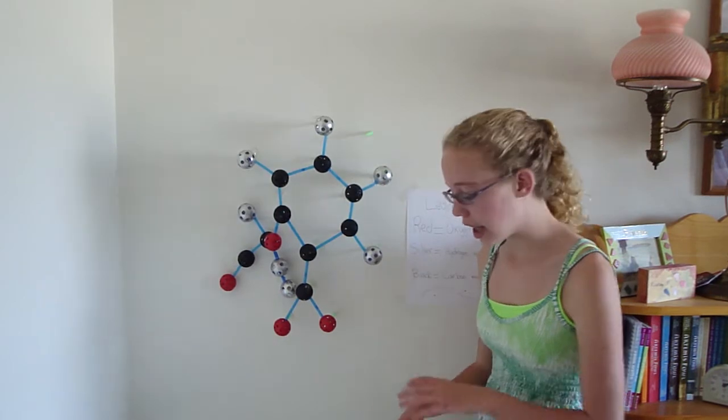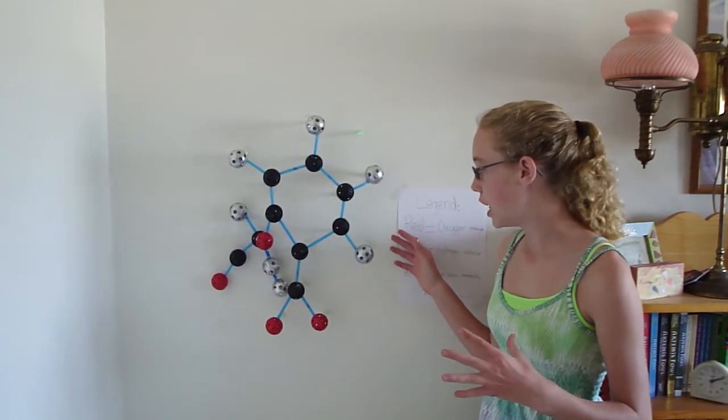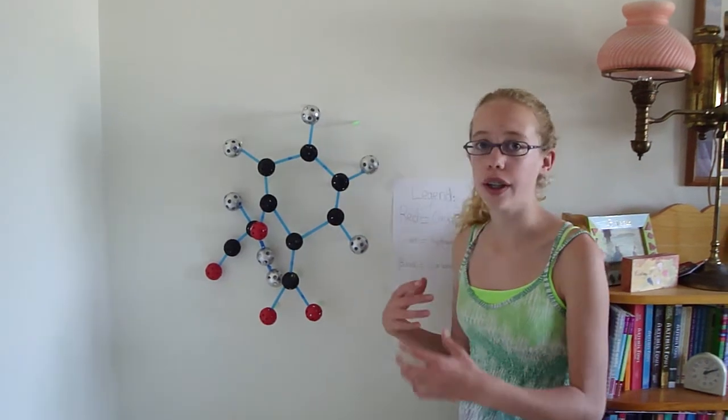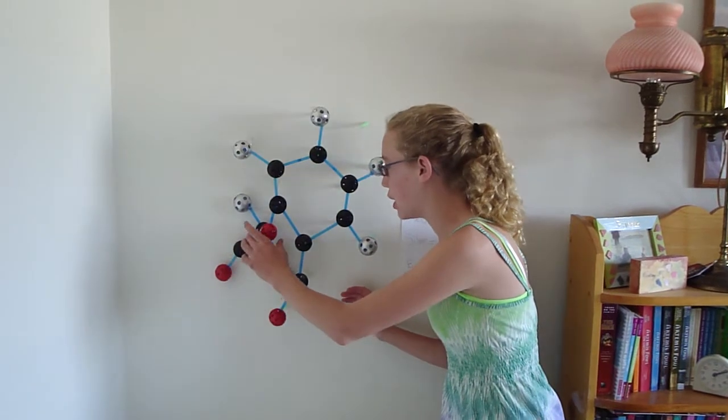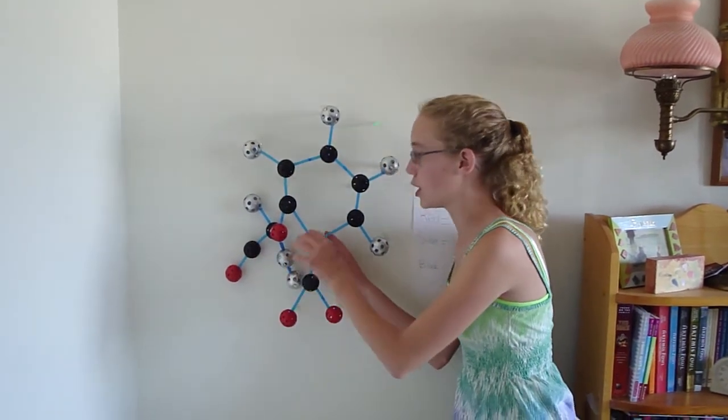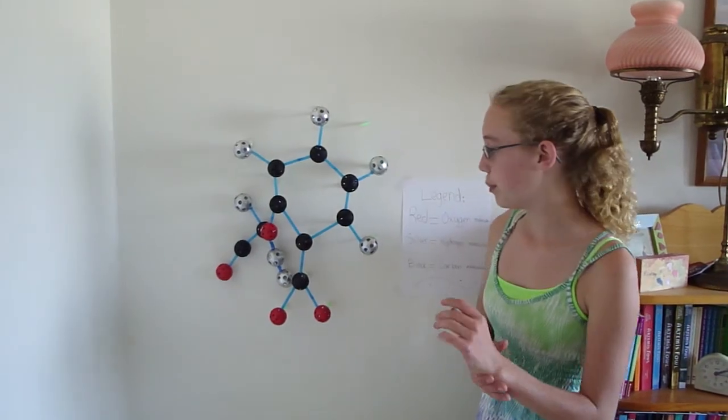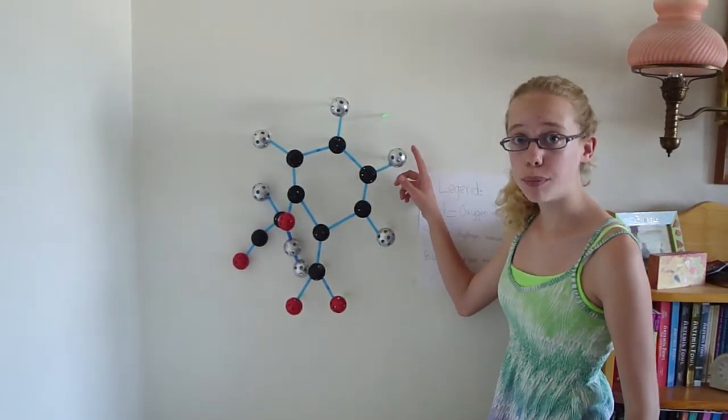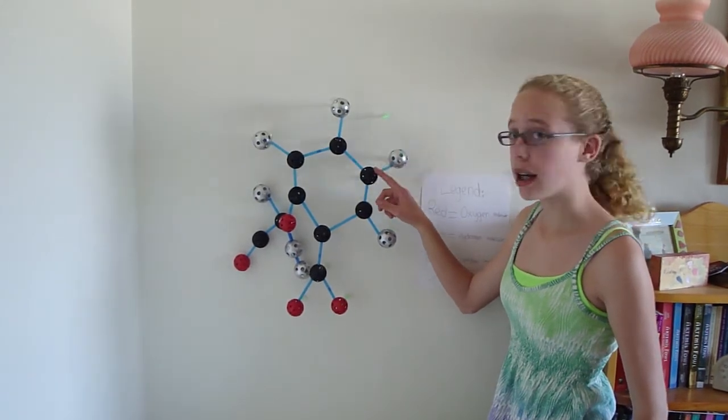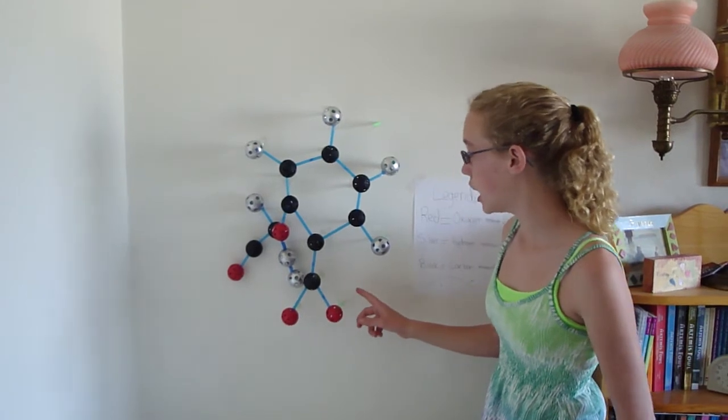I already had kind of roughly put it together. I didn't use the green things to start with. And then I said, oh, I need to use these. As you can see, there's green things here and none here because it's three-dimensional. The silver ones are hydrogen atoms, the black ones are carbon atoms, and the red ones are oxygen atoms.